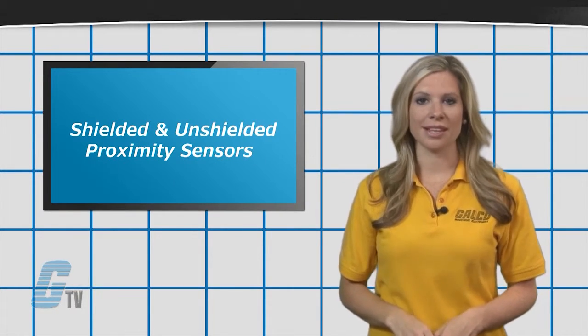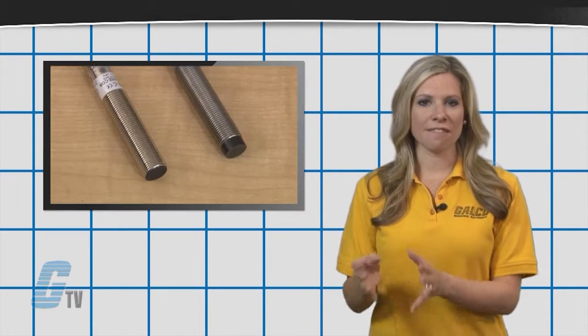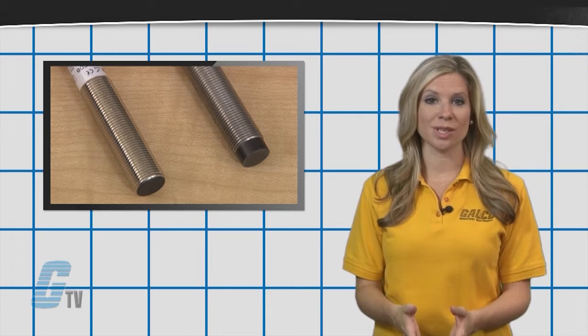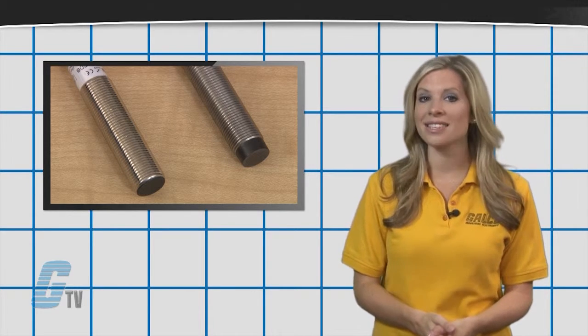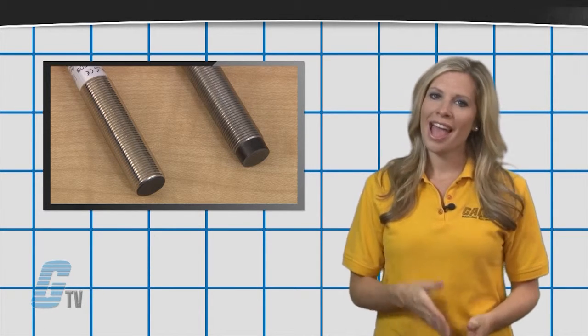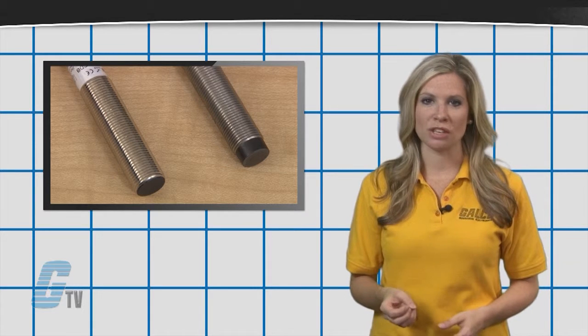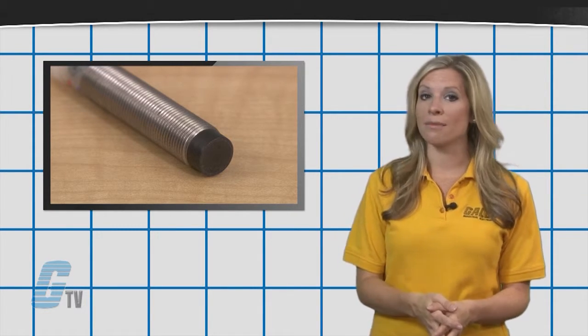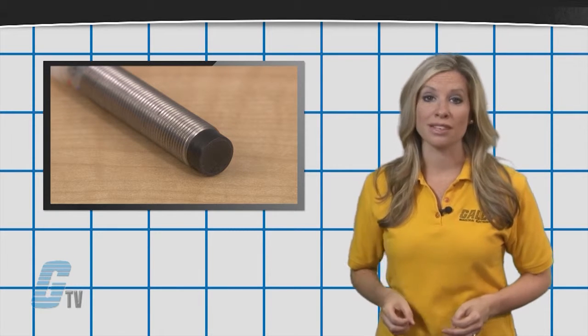Shielded and unshielded proximity sensors are different in that the face of the shielded sensor is exposed and can be mounted with the sensing object. The unshielded sensor has the face and small portion of the sides exposed. This allows the detection of objects from the side as well as the front.